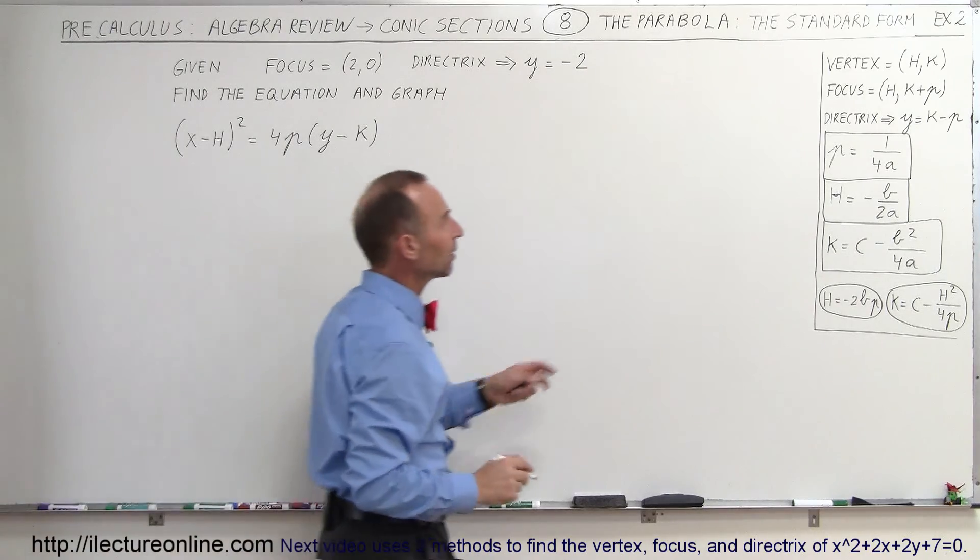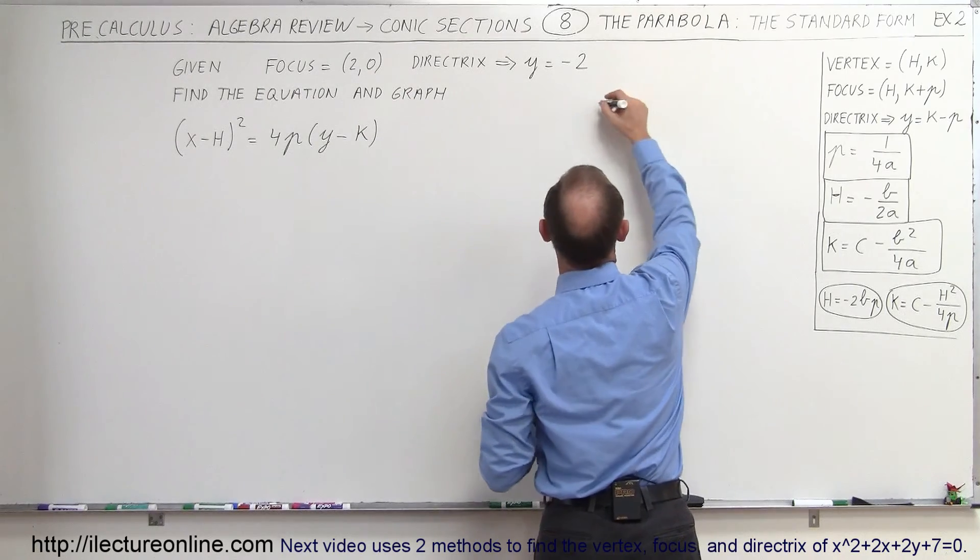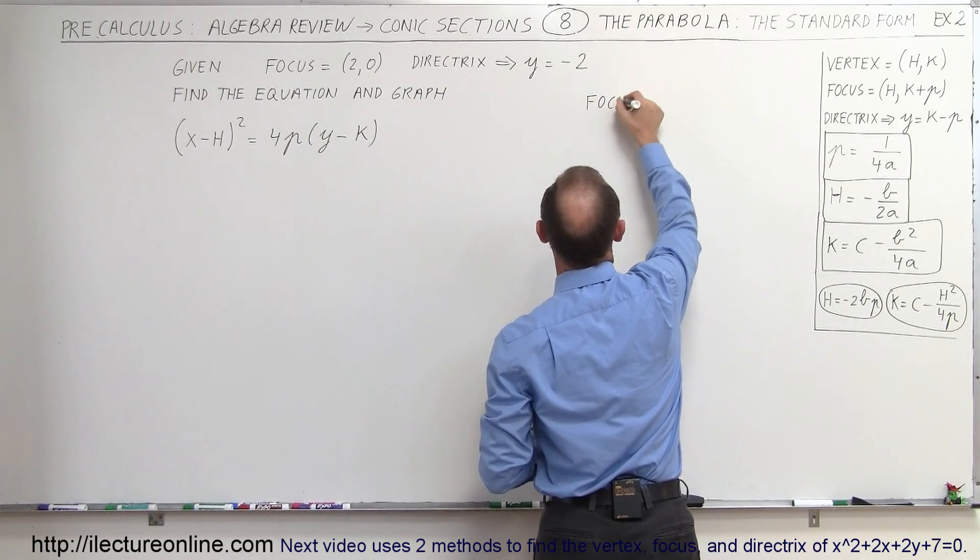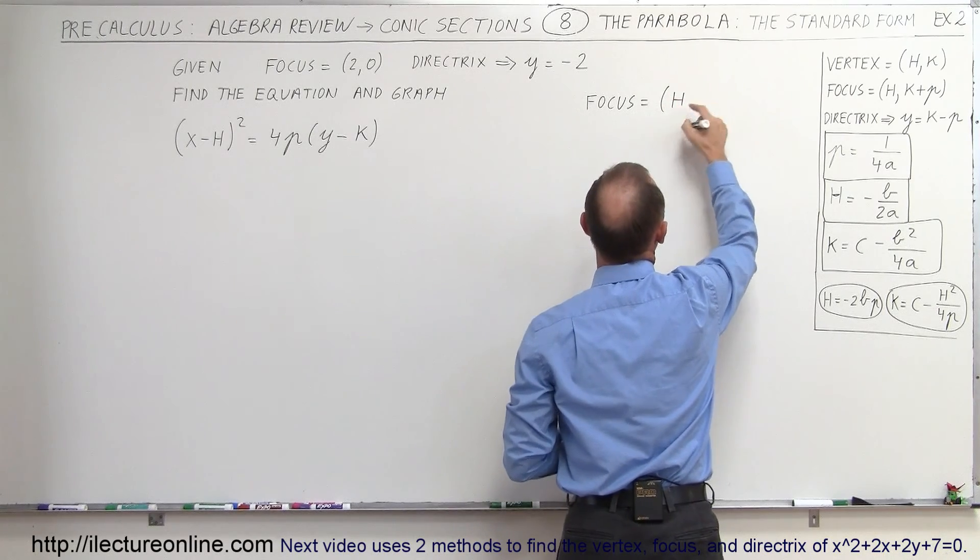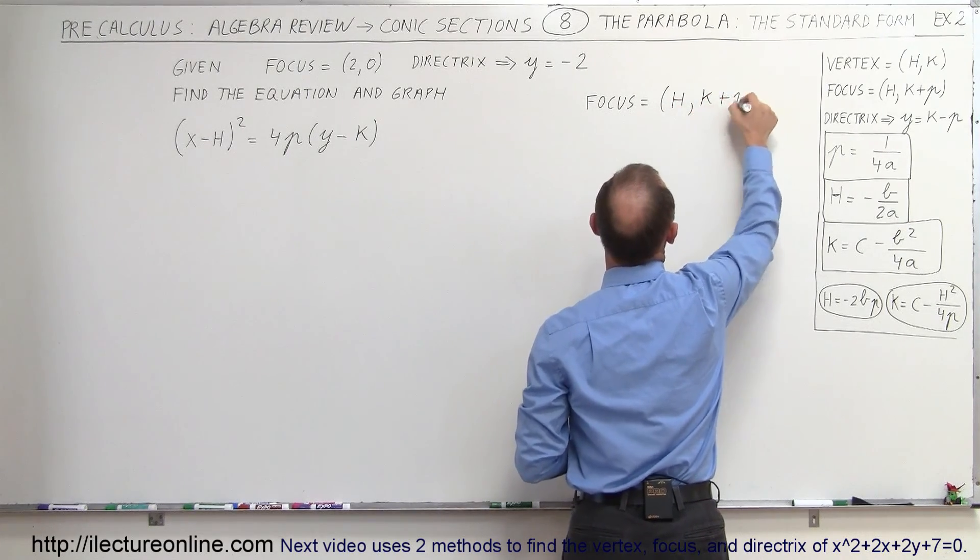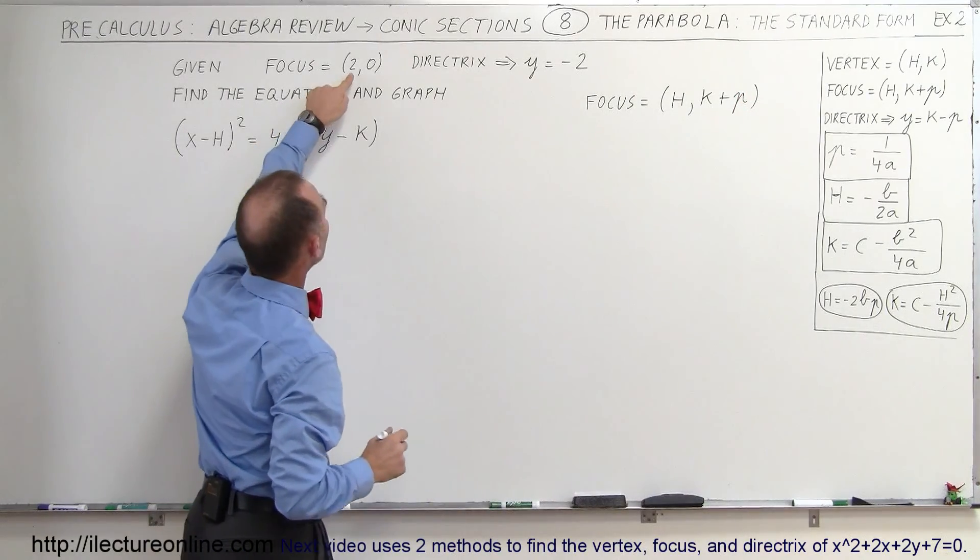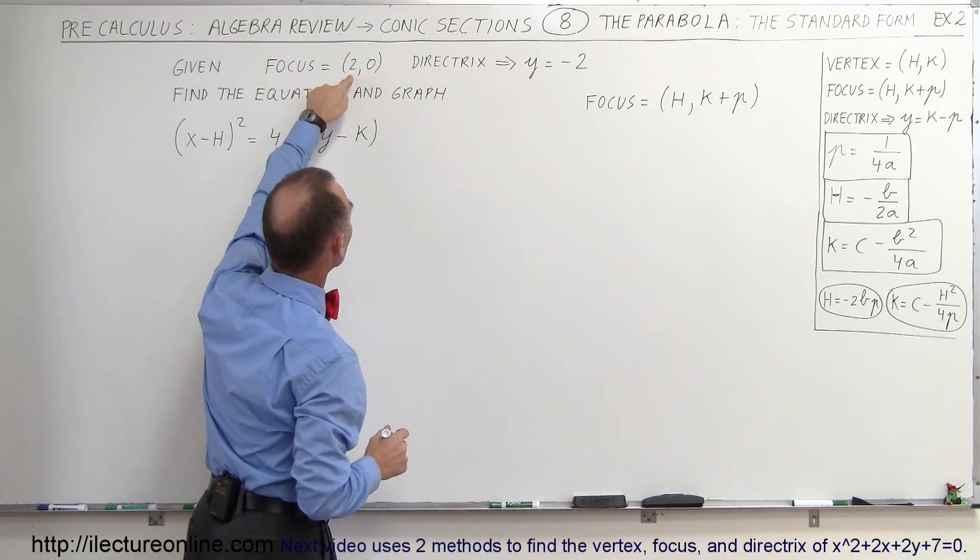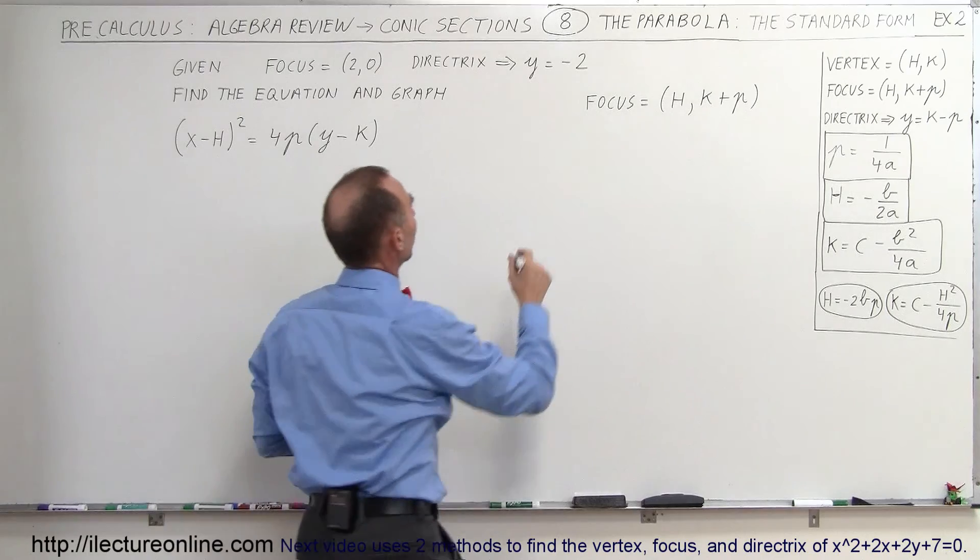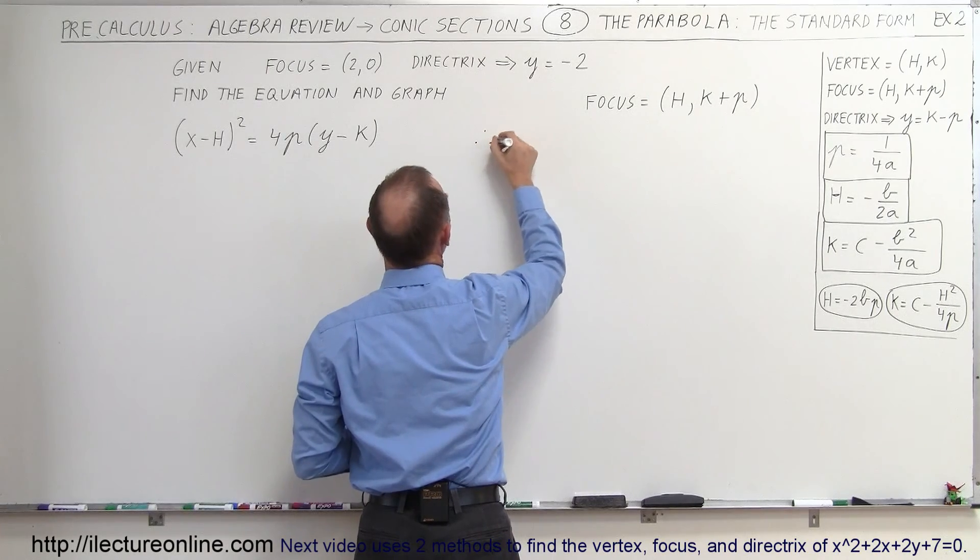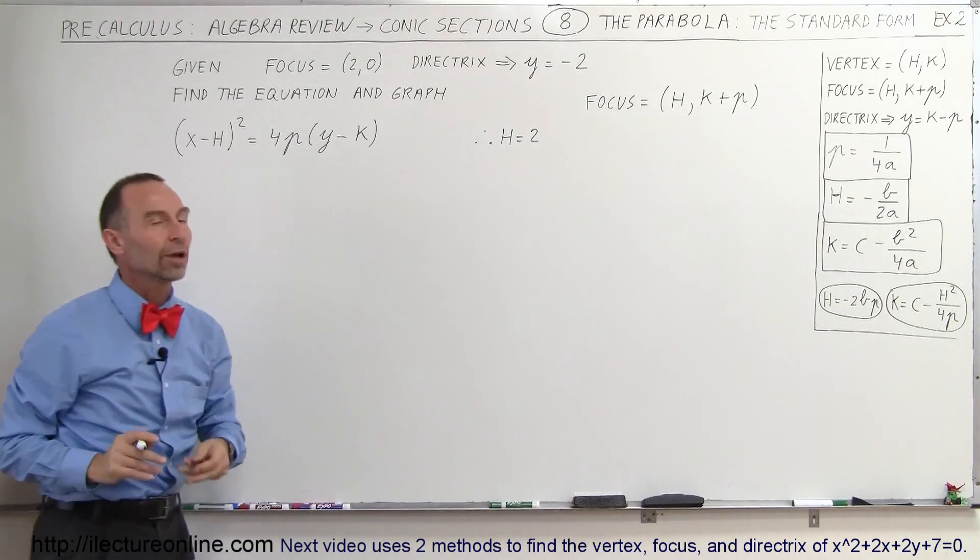So here we can tell that the vertex is (h,k) but they don't give us the vertex. But they do give us the focus and we know that the focus in general is equal to (h, k+p). It has the same x-coordinate as the vertex. So that means we know that the x-coordinate of the vertex and the x-coordinate of the focus is equal to 2. So therefore we can conclude that h is equal to 2, which means we already know one of the three unknowns in the equation.